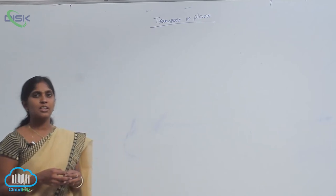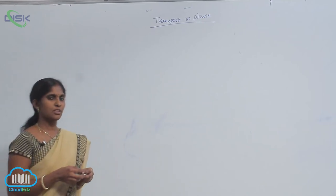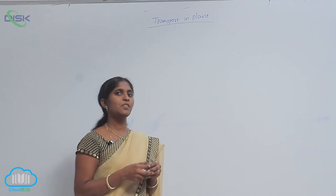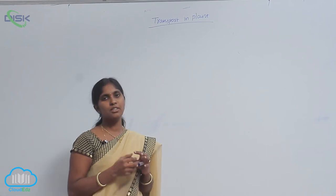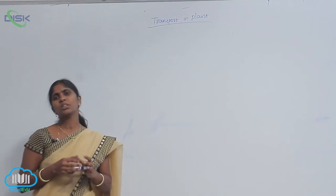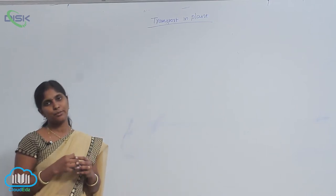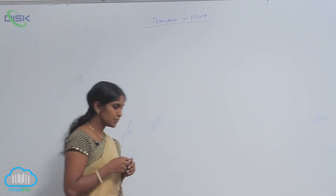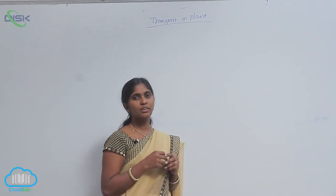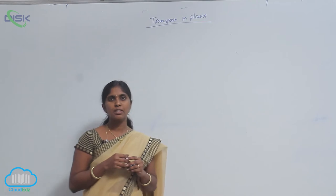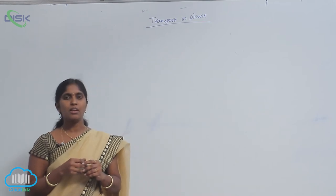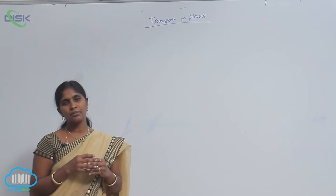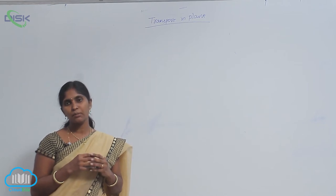Plants are morphologically distinct with roots, stem, leaves, flowers and fruits. What is the function of roots? The roots absorb the water and minerals from the soil and give them to the shoot or stem of the plant.